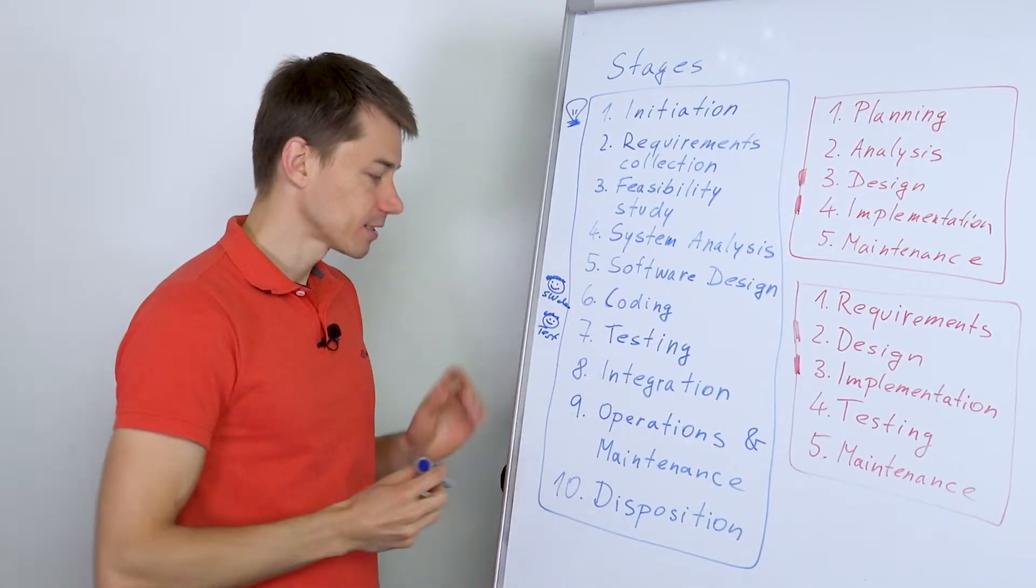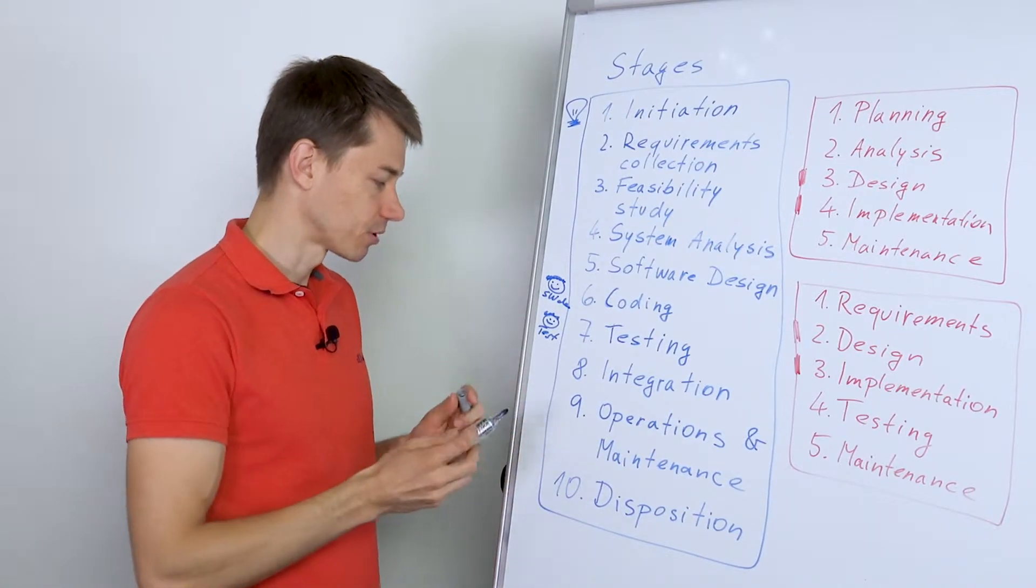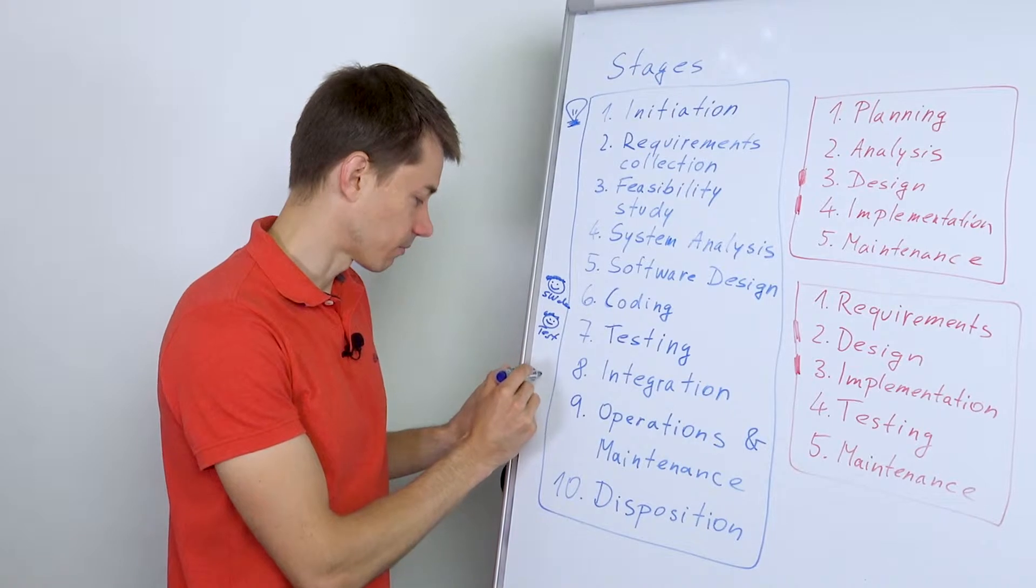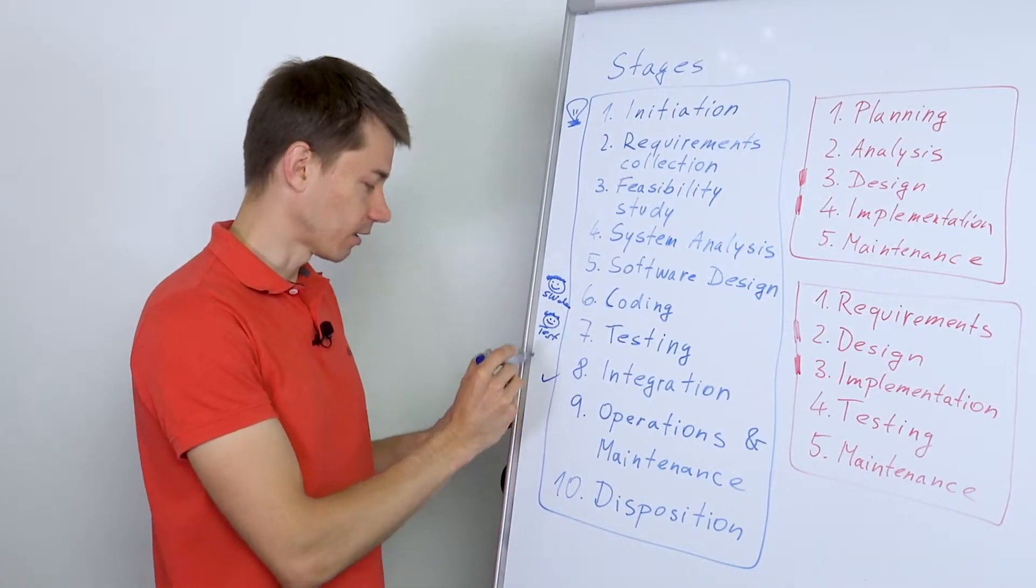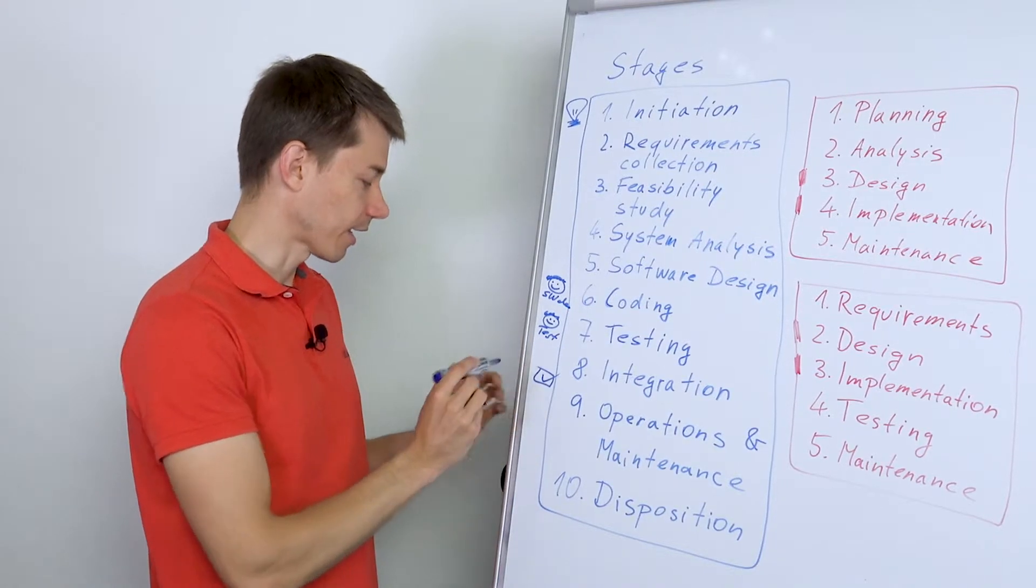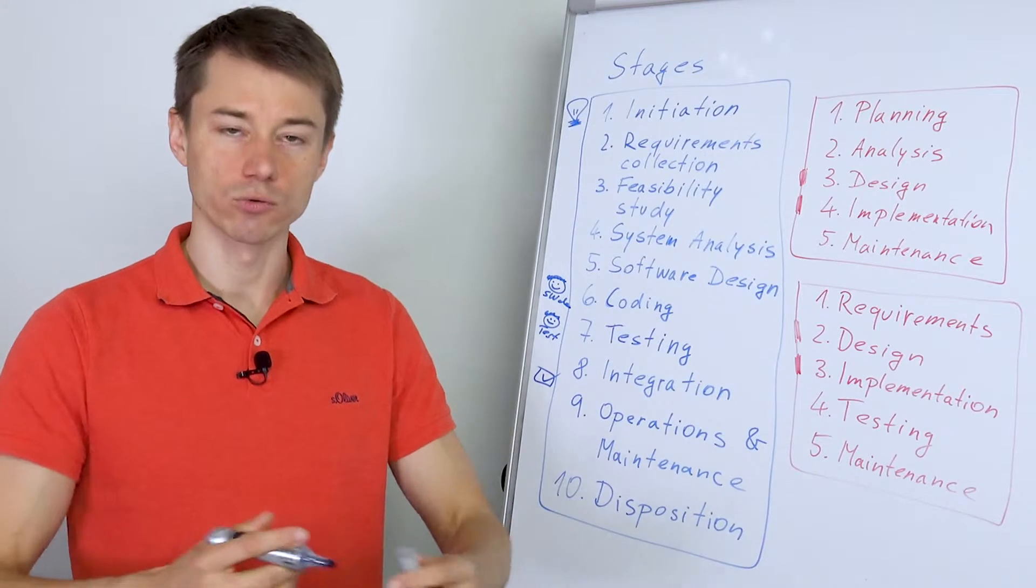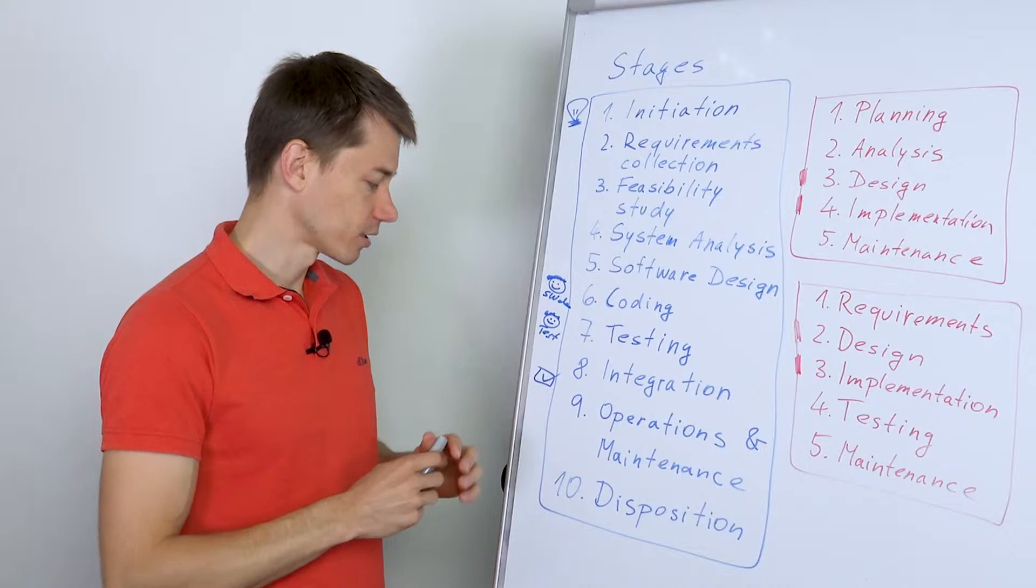Number nine, operations and maintenance. So this is actually already shipped to production. So somewhere here would be like a tick, a box that is ticked, like hey, everything is good. We can roll it out. We can ship it to customers. We can deploy it to production, in other words.